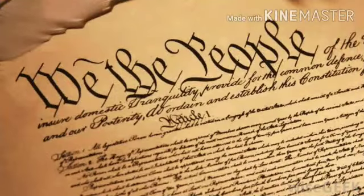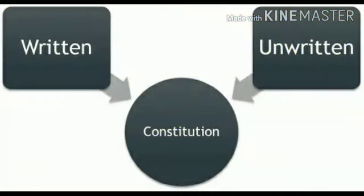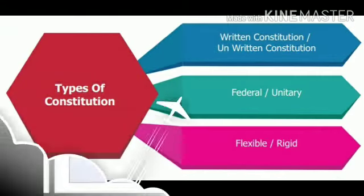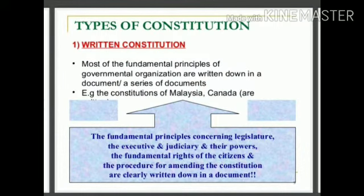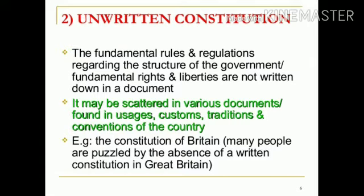Constitutions. A constitution is a written document containing all the details like the form of government, their respective powers, as well as limits on these powers. A constitution may be written or unwritten. A written constitution becomes necessary for many reasons — the goals of the people and the vision of the leaders are contained and protected in the constitution. The constitution of Britain is an example of an unwritten constitution, as there is no single document in the British constitution.